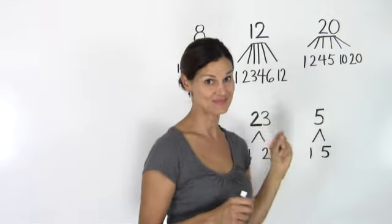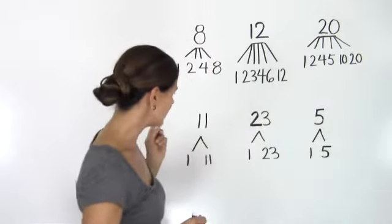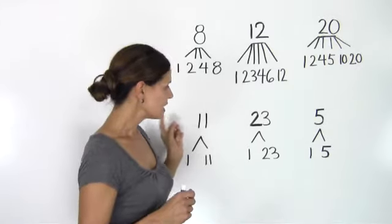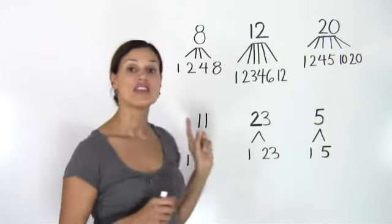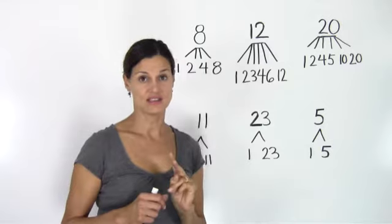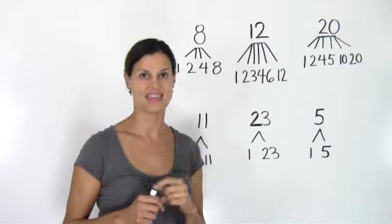Now prime numbers are whole numbers with exactly two factors: the number 1 and the number itself.